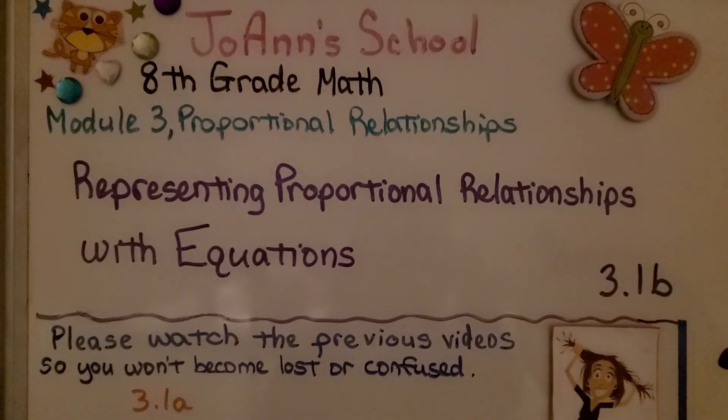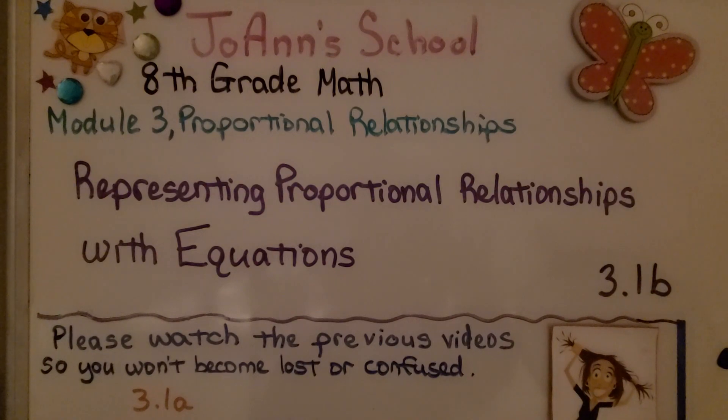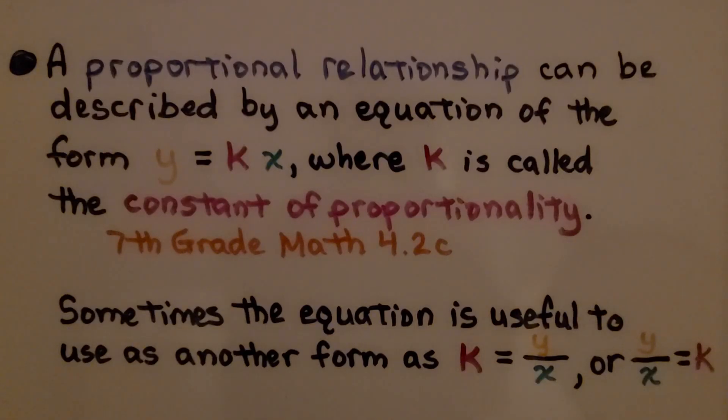Representing Proportional Relationships with Equations, 3.1b. A proportional relationship can be described by an equation of the form y equals kx, where k is called the constant of proportionality.